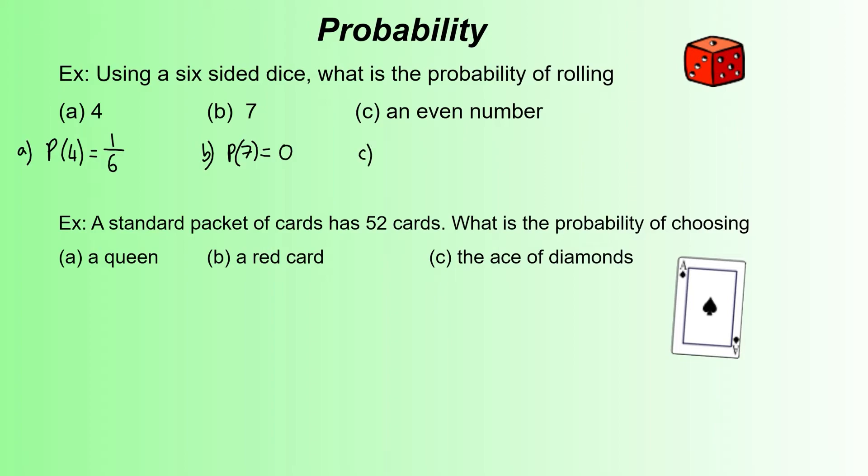Part C is an even number. We're looking at 2, 4, and 6. Probability of picking an even number - there's 3 even numbers out of 6. That'd be a 1 in 2 chance or half chance or 50% chance, which makes sense.